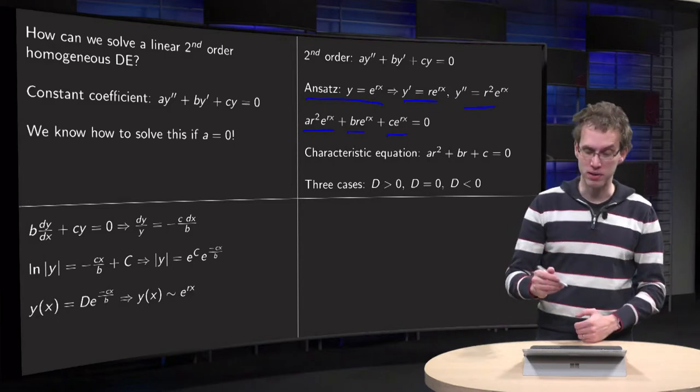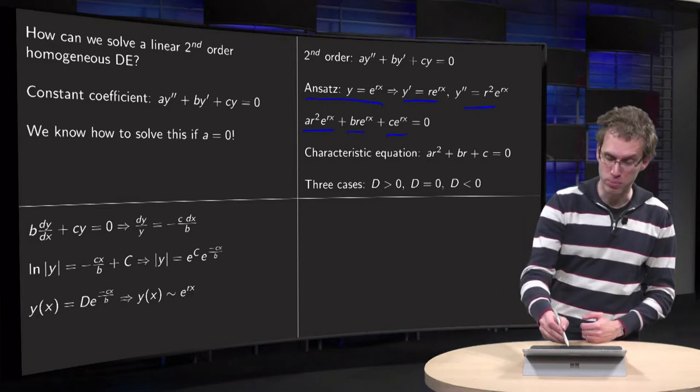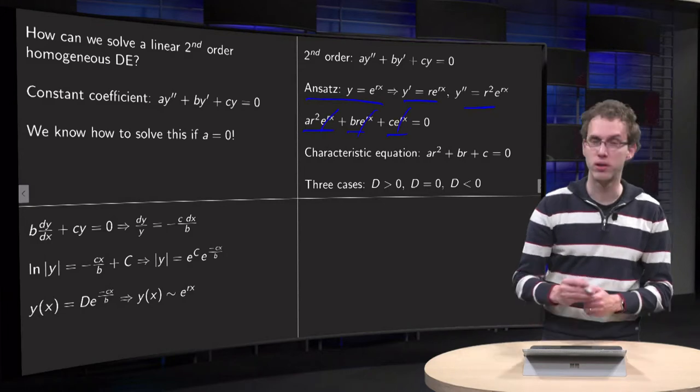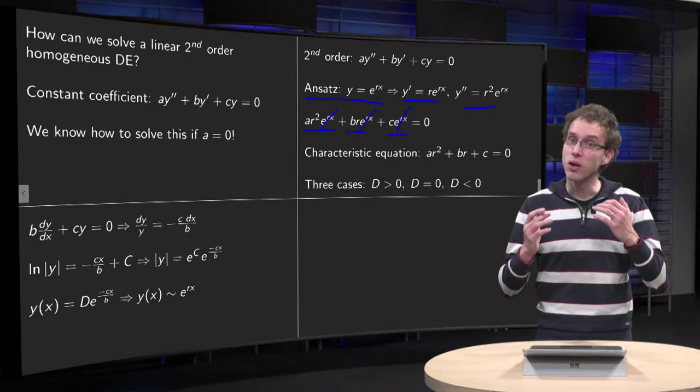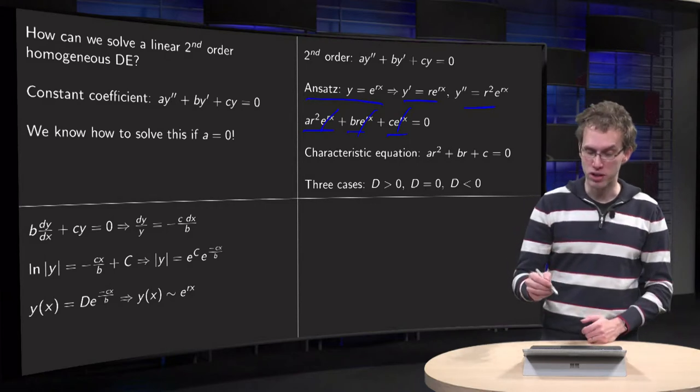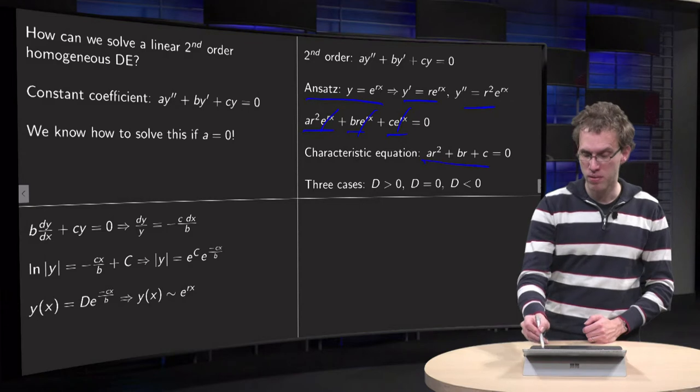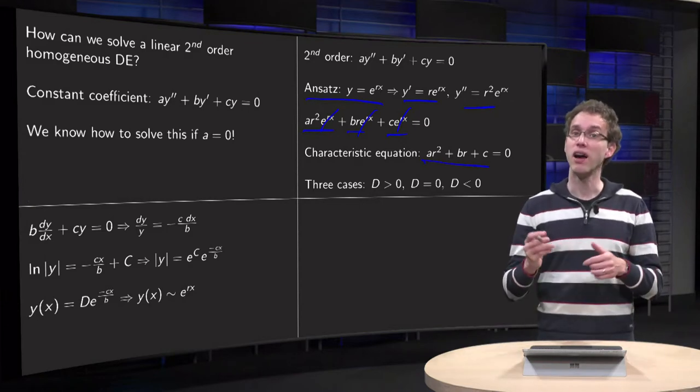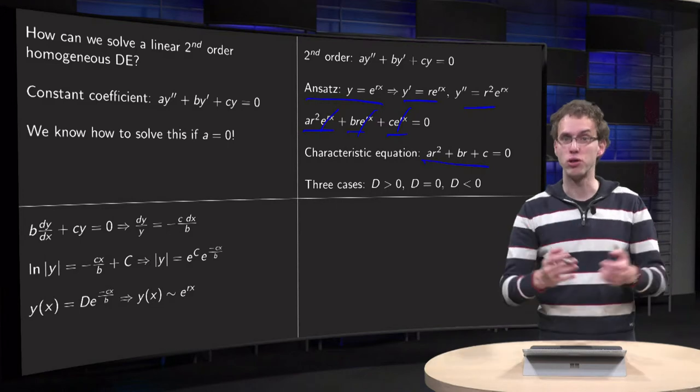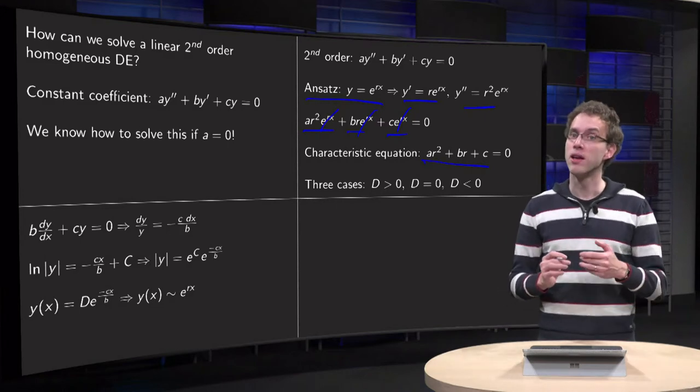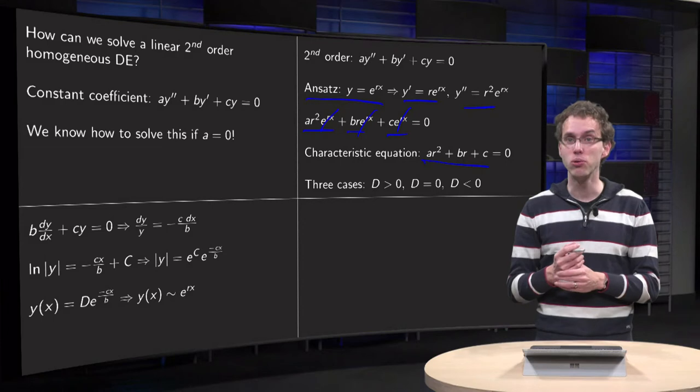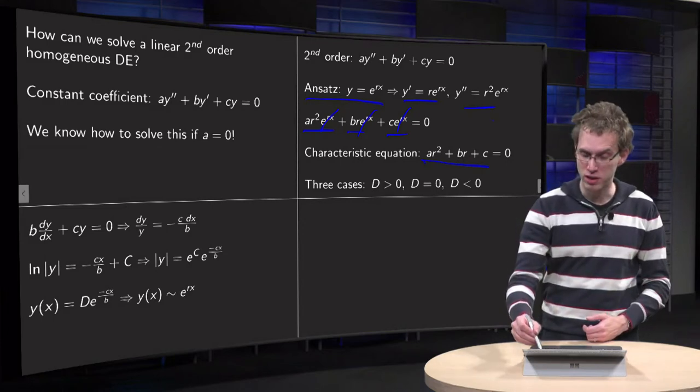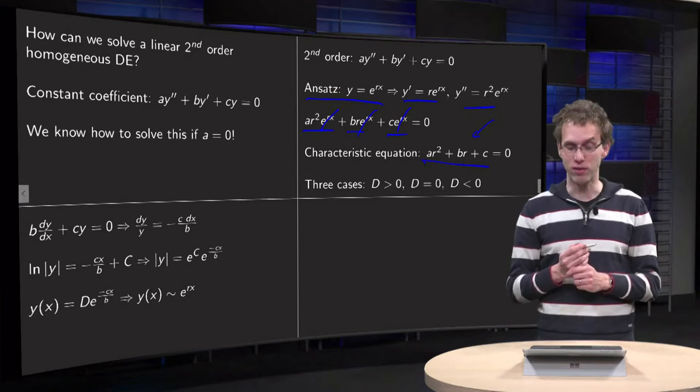And now you see what happens. The e to the power of rx drops out, because e to the power of rx is everywhere and is never zero. So if you have a solution, your r has to satisfy this equation: a*r^2 plus b*r plus c equals zero. So we have a, b and c, those are given, those are numbers given in our problem. So if we want to find solutions of our differential equation, our r has to satisfy this so-called characteristic equation.